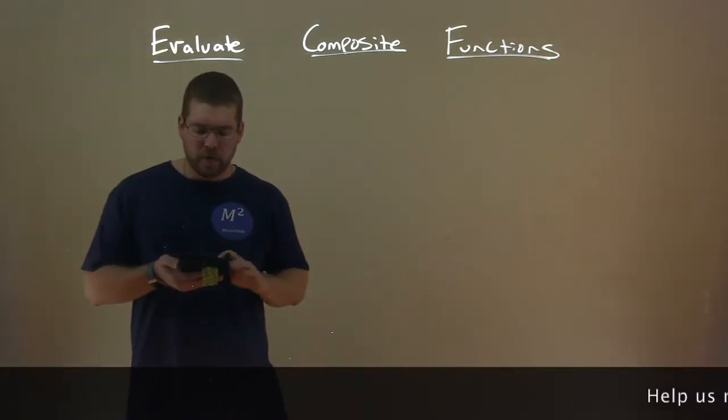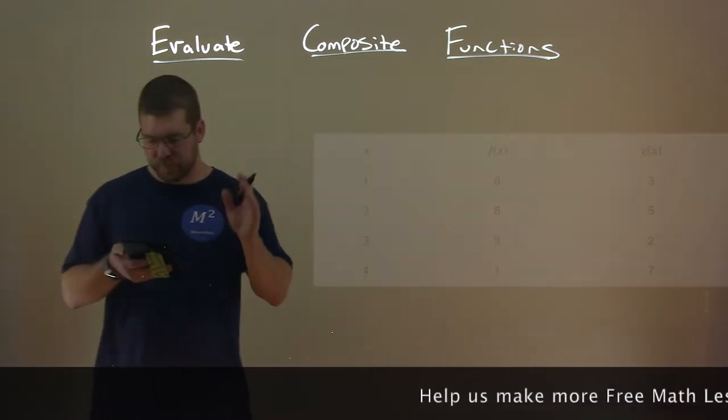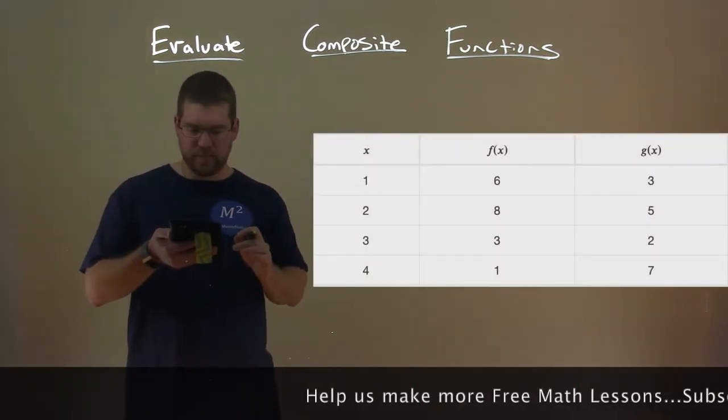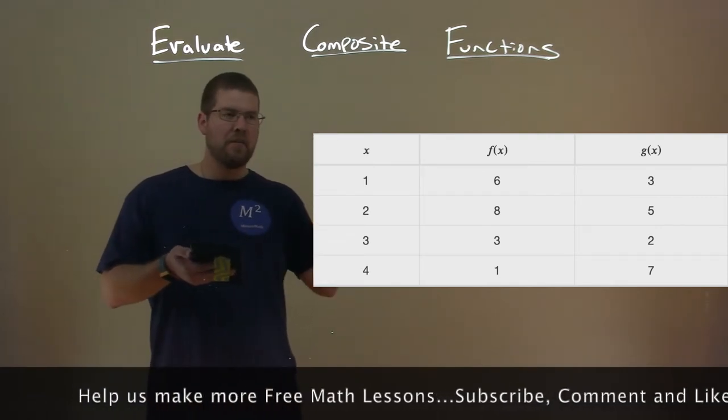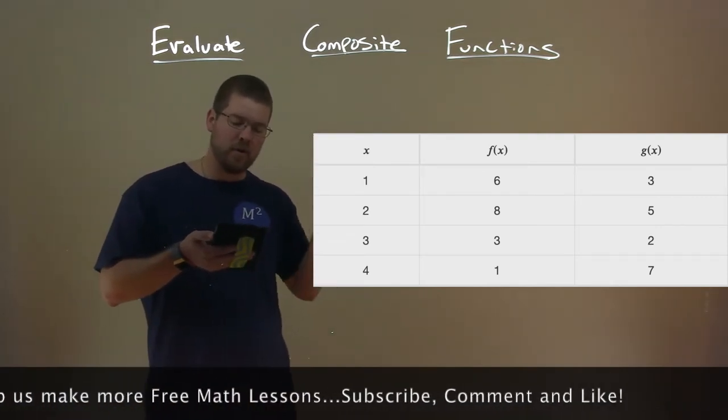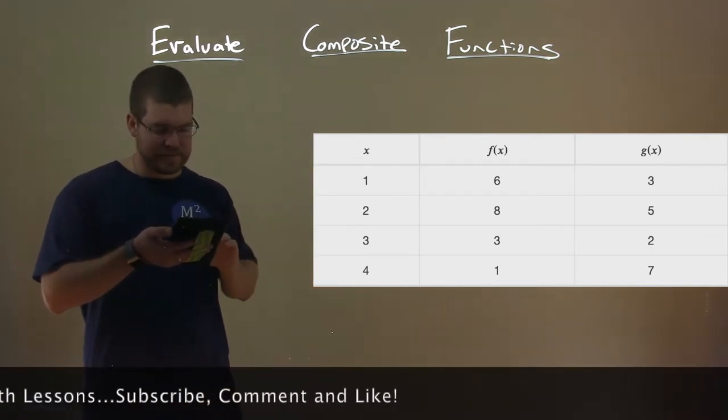Our first thing we're going to look at when we evaluate composite functions is a table. We're given a table here, and our table has the x column of 1, 2, 3, 4, f of x column 6, 8, 3, 1 respectively, and g of x: 3, 5, 2, and 7.